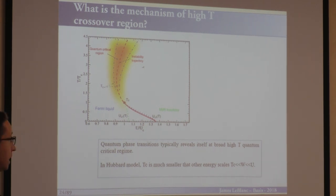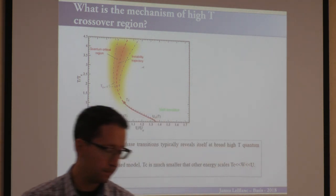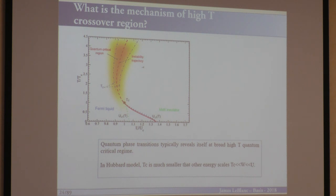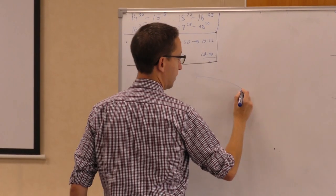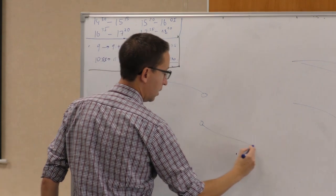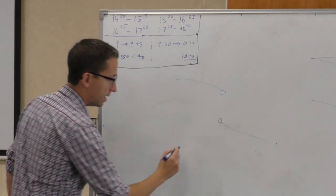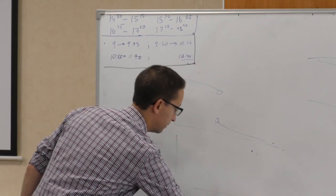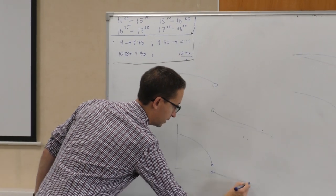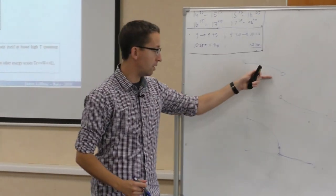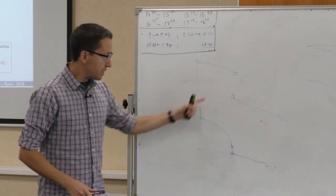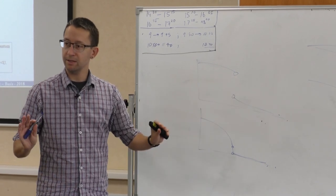A question was asked: are there cases where a first-order phase transition turns into a second-order phase transition? In the sense that when the gap closes, the derivative is still discontinuous? It's not impossible in general, but it doesn't happen in this particular problem. That's all I can say — it's a great question.